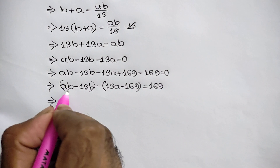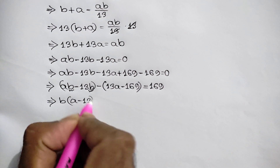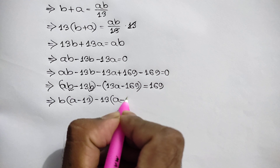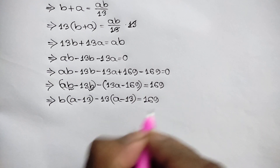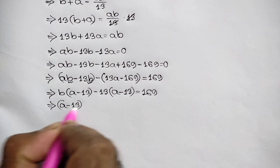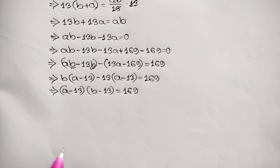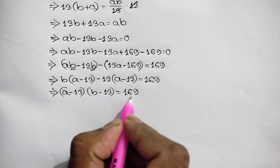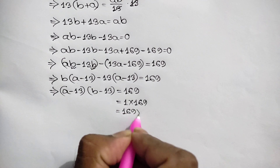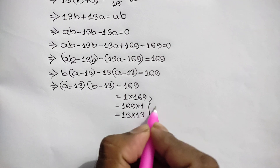Taking b common from the first two terms, we get b times a minus 13, minus 13 times a minus 13, which factors as a minus 13 times b minus 13 equals 169. Since 169 equals 1 times 169, 169 times 1, and 13 times 13, we will have 3 cases.